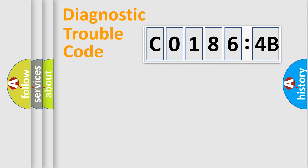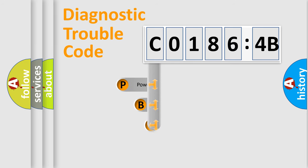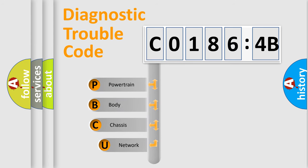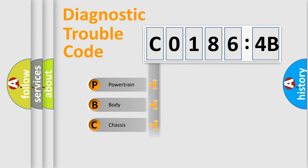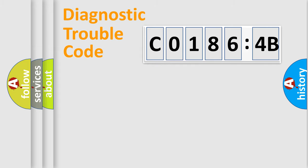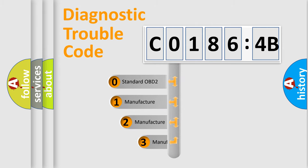Let's look at the history of diagnostic fault code composition according to the OBD2 protocol, which is unified for all automakers since 2000. We divide the electric system of an automobile into four basic units: Powertrain, Body, Chassis, and Network. This distribution is defined in the first character of the code.